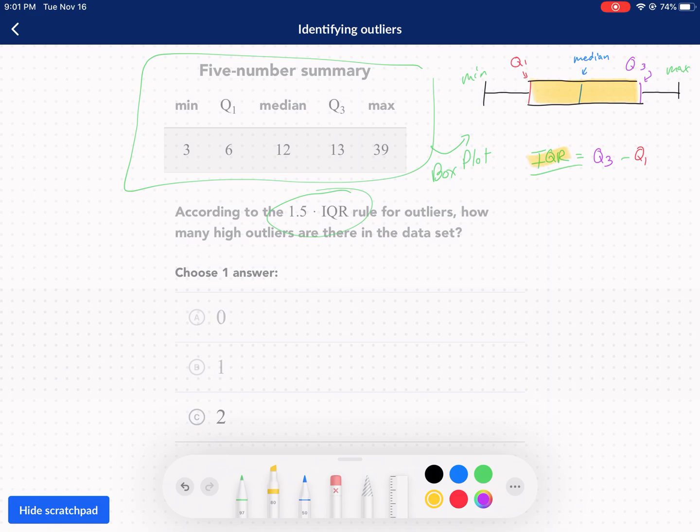The way we do that is first we have to find what's called the IQR, the interquartile range. Essentially we just take the difference between Q3 and Q1. In this case it's fairly simple: we do 13 minus 6 and it gives us those numbers. So our IQR is 7. That means from Q1 to Q3 the range of data goes seven numbers deep. Now how do we use this IQR rule? We multiply this number...